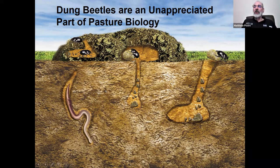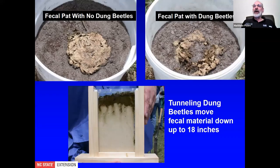Earthworms and other large biology are very important in opening up soil. Looking at these comparison slides: one cow pie had no dung beetles, the one with dung beetles for about a week's time has been well worked and is really just a shadow of what was there. Our research has shown that these nutrients are taken down deep in the soil, and that is of real importance in the overall nutrient cycling in your pastures.